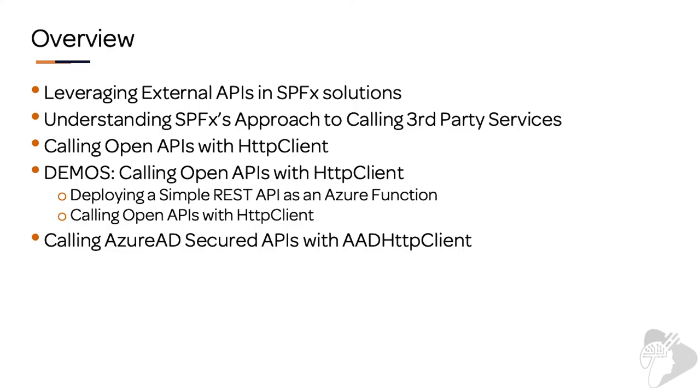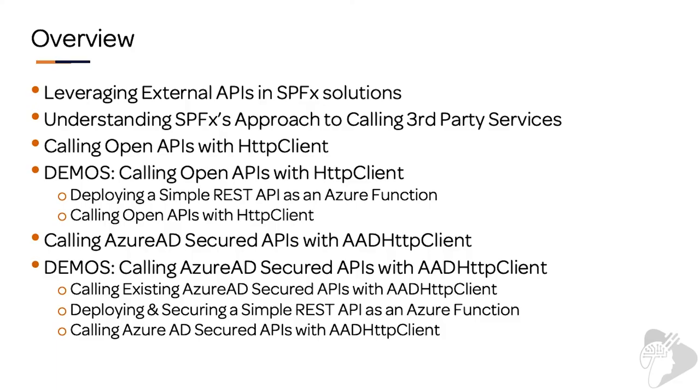Then I'm going to switch over and talk more about how the SharePoint Framework deals with calling a secured API and how the underpinnings of all the code actually work. We're going to see the infrastructure that Microsoft has given us and then see how we can create our own. I'm going to show you how to take a simple SharePoint REST API, deploy it as an Azure Function, and then secure it with Azure AD. Then I'm going to show you how to create a custom SharePoint Framework solution that uses a special API called the AAD HTTP client to call our secured endpoint and other endpoints secured with Azure AD.